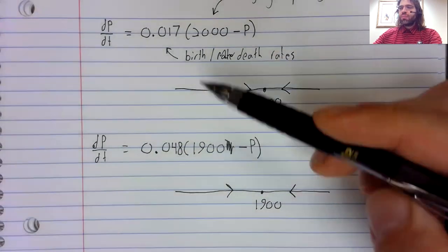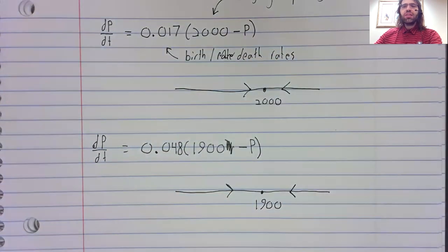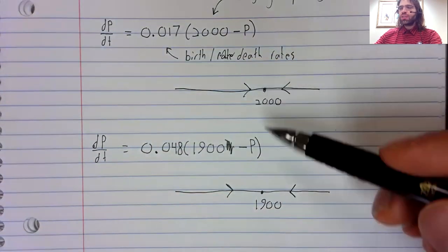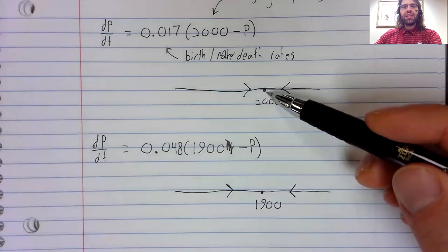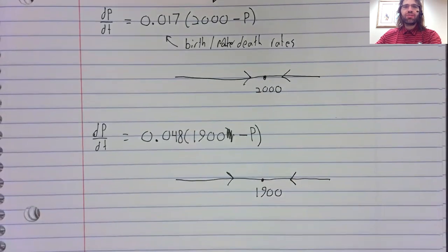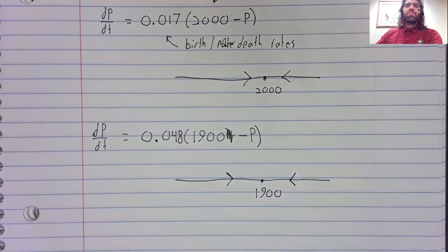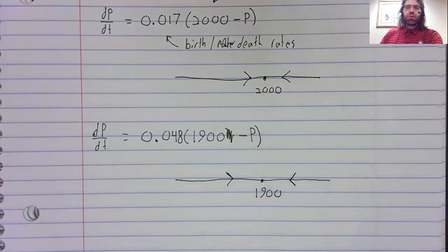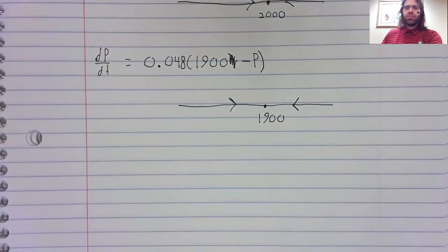So changing these numbers changes the details. It changes what the carrying capacity is. It changes how quickly the population approaches the carrying capacity. But the big picture that the population approaches a carrying capacity remains unchanged.